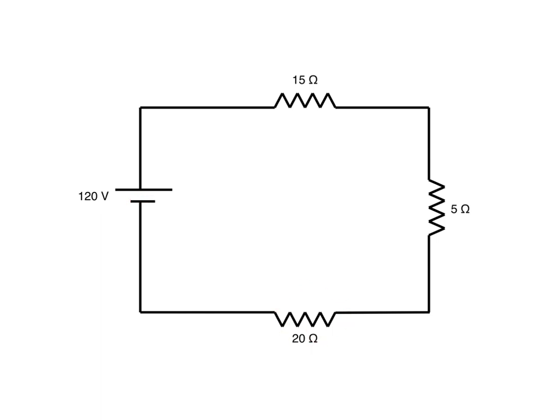We have a 20-ohm resistor in series with a 5-ohm resistor in series with a 15-ohm resistor. Remember, current flows from negative all the way through these resistors to positive. This is like a pump that's got 120 volts of pressure. We can refer to voltage as electrical pressure.